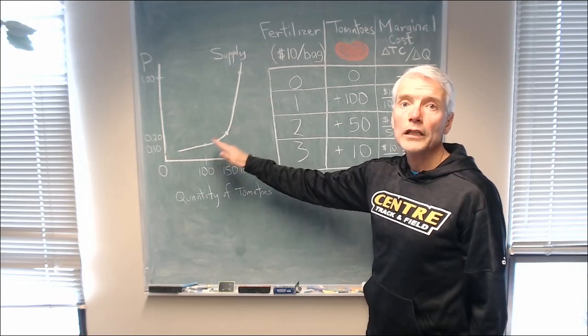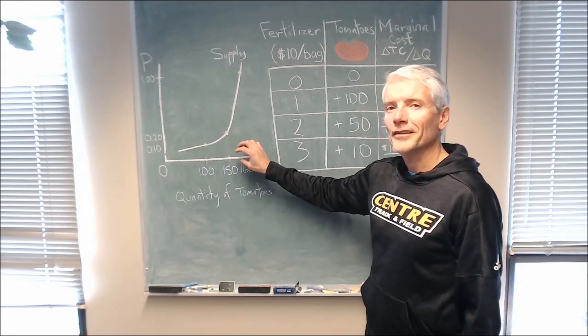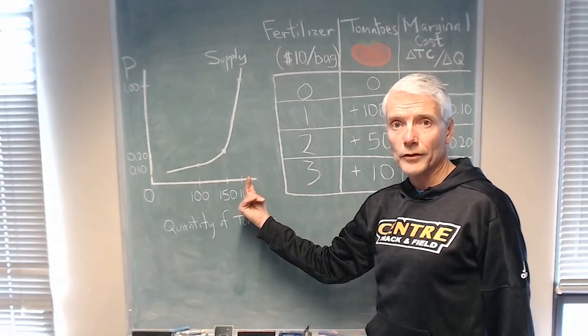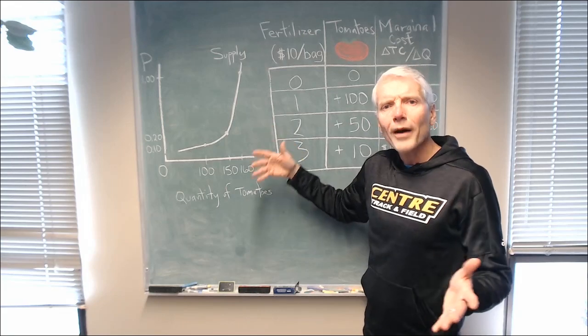The supply curve shows us the relationship between the price and the quantity supplied. And the upward slope tells us that as the firm supplies more, it must receive a higher price. Why is that?